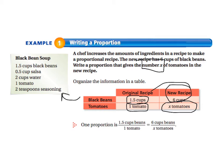So we can write this information exactly how it is in the chart, in the table that we just made, where we have 1.5 cups of black beans over one tomato on the left, and we have 6 cups of beans over x tomatoes on the right.